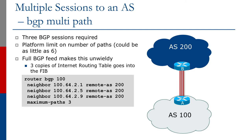It depends which platform you're using — some platforms have as little as six parallel paths possible, others can go up to 16 or even more. What this does is put three copies of the BGP table into the FIB, and the router will load balance using the FIB to send traffic over the three links between the two autonomous systems. Just note: if you're using the full BGP table — in October 2017 that was 670,000 prefixes — three copies of 670,000 V4 prefixes makes for a rather large FIB.